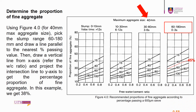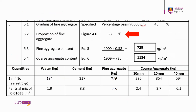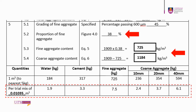Using figure 4.0 for 40 mm maximum aggregate size, pick the slump range 60 to 180 mm and draw a line parallel to the 45% passing value. Then draw a vertical line from 0.58 on the x-axis and project the intersection to the y-axis to get the proportion of fine aggregate. Using equation 5, the fine aggregate content is 725 kg/m³, and using equation 6, the coarse aggregate content is 1184 kg/m³.